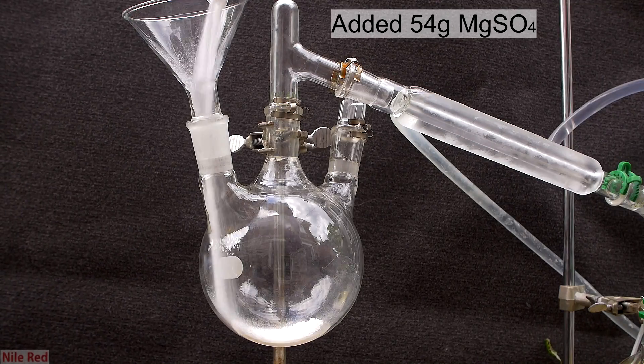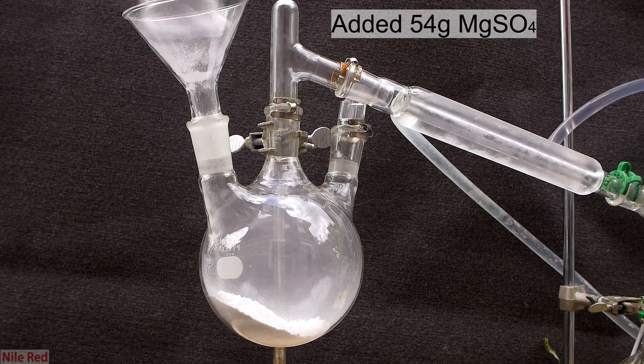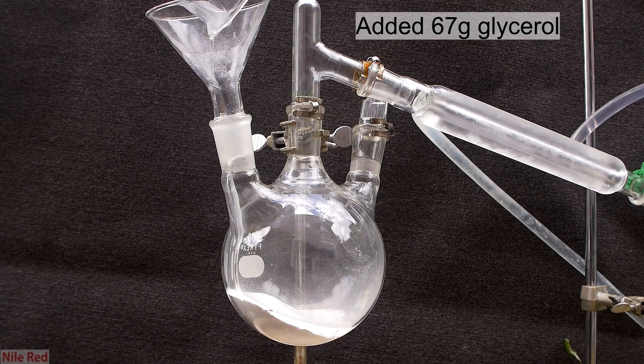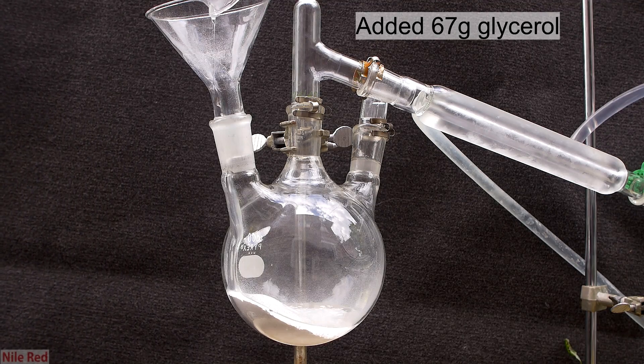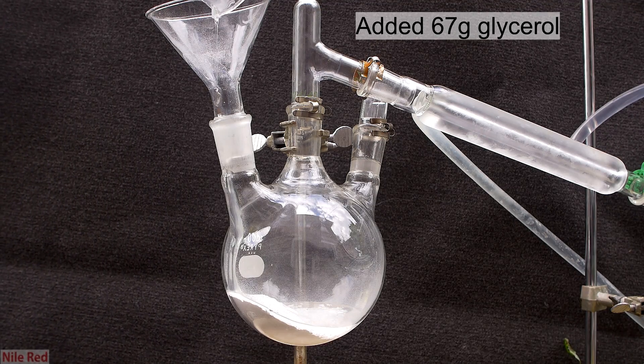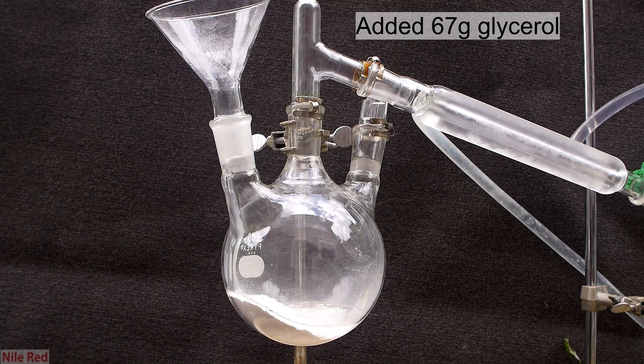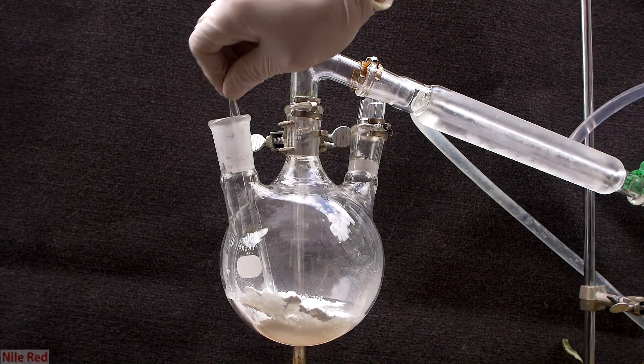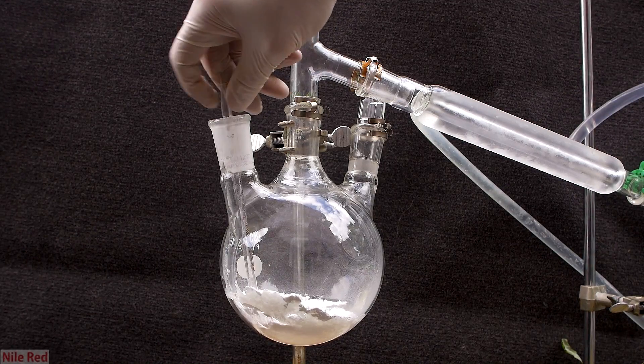To start things off, I added about 54 grams of the powdered magnesium sulfate. On top of the magnesium sulfate, I poured in about 67 grams of glycerol, and in hindsight, I probably should have done this the other way around. Since I added the powder first, the glycerol kind of just sat on top, and I need to use a glass stir rod to mix things around.